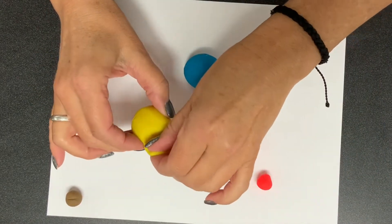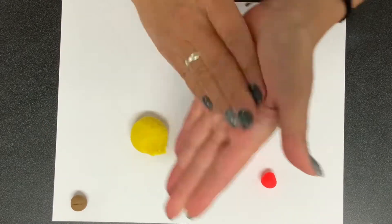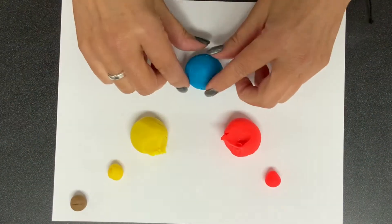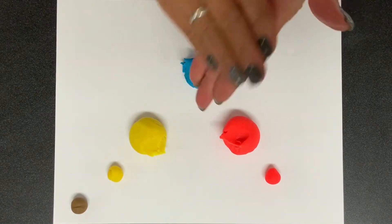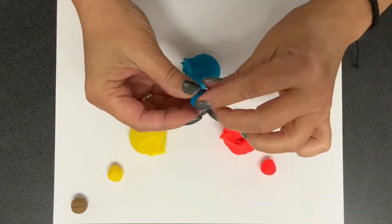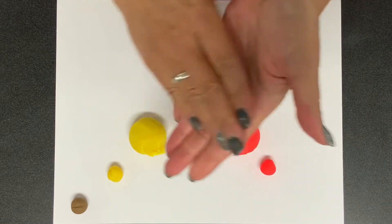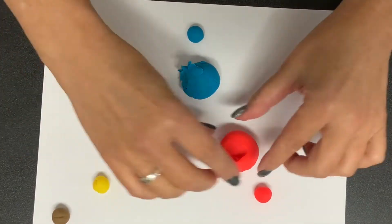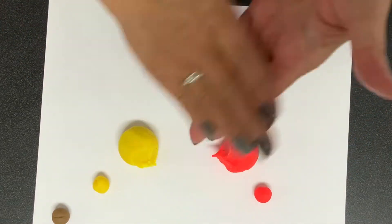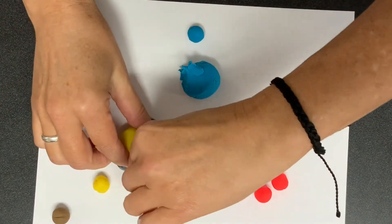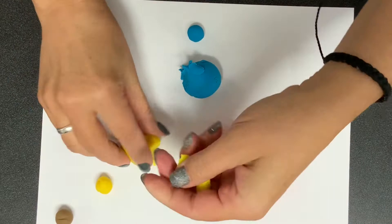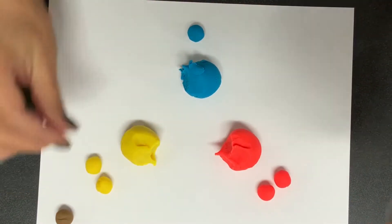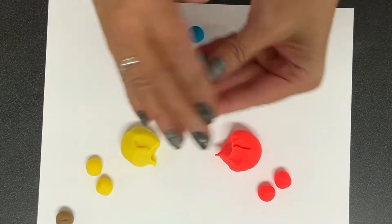So you're gonna do that with the red, yellow, and the blue. You're gonna do two of each color and make sure that they are all the same size so that way we can get the colors to mix evenly.